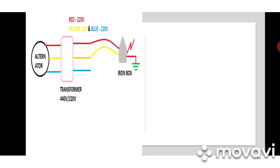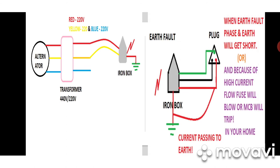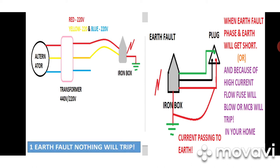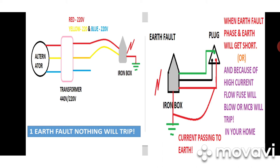Now let's see the advantage of having no neutral — the isolated neutral system. In a home, if an iron box has a fault and current starts leaking, after the iron box touches earth, current flows to earth. A fault occurs, high current flows, and the fuse blows or MCB trips. So even one earth fault will trip the MCB. But in a ship, if one phase touches earth, nothing will happen because there is no neutral.